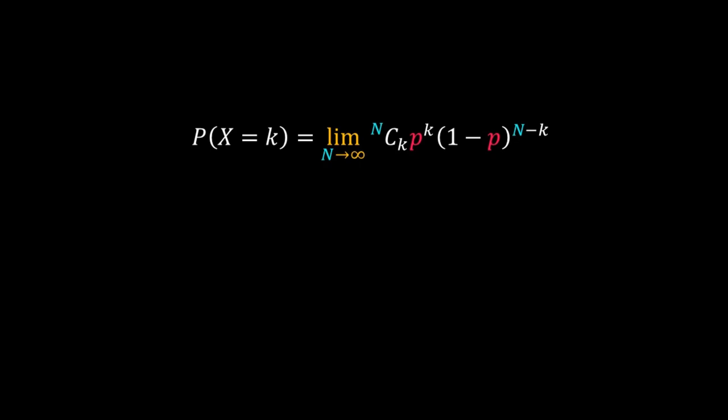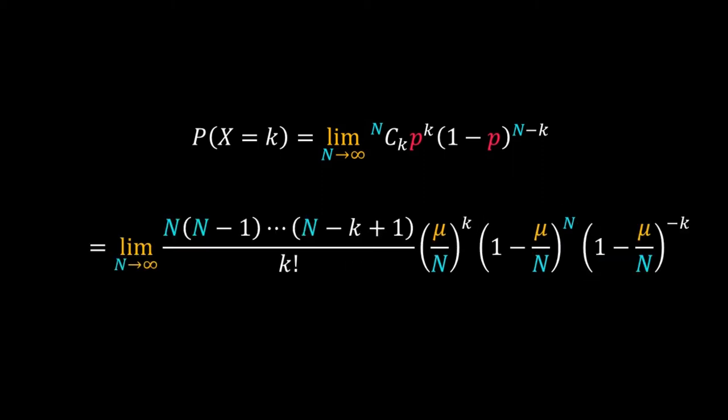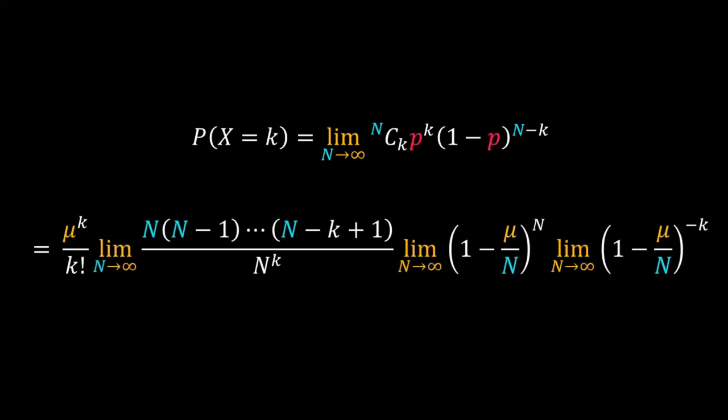Replace p with μ divided by n. Now expand n choose k in terms of factorials and simplify it. μ to the power k and factorial k do not depend upon n, so take those two terms out of the limit. This numerator is a product of k terms. When n tends to infinity, this product equals n to the power k, so we get one.